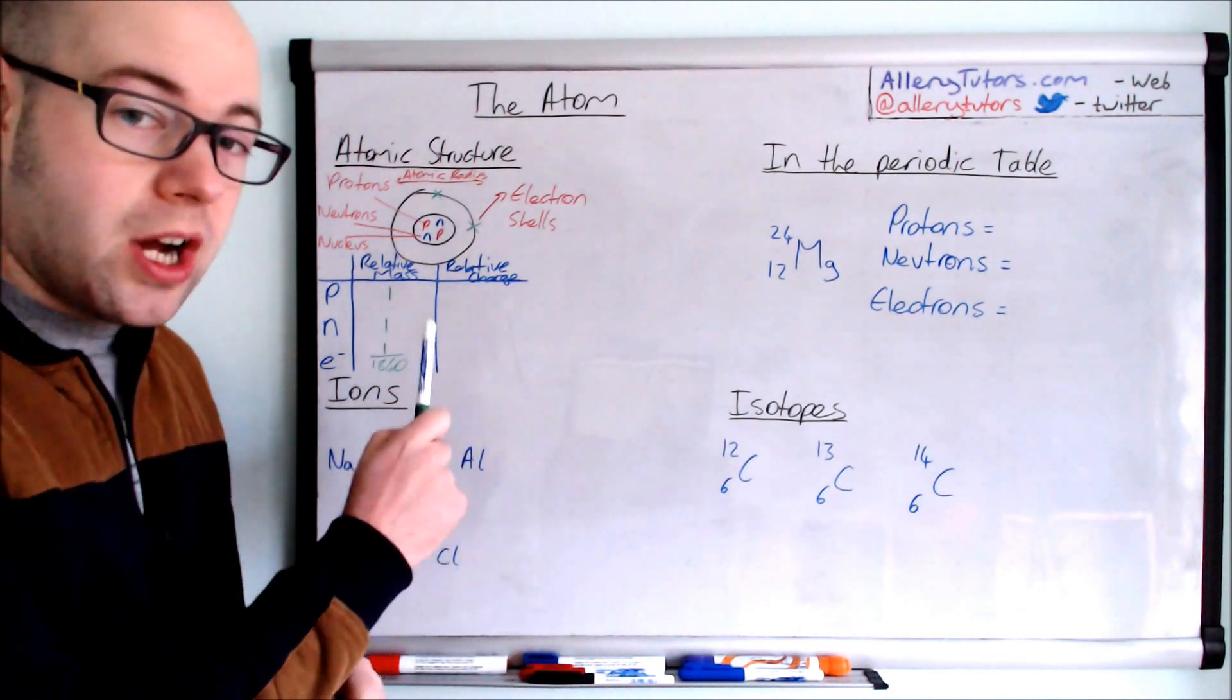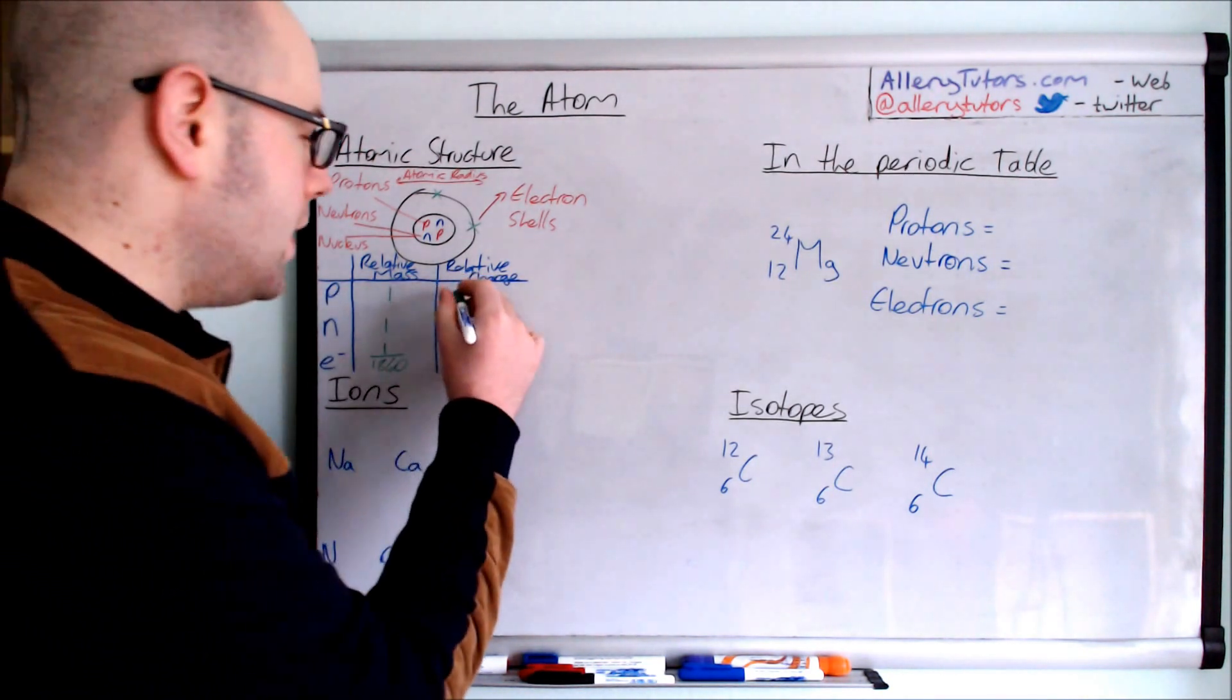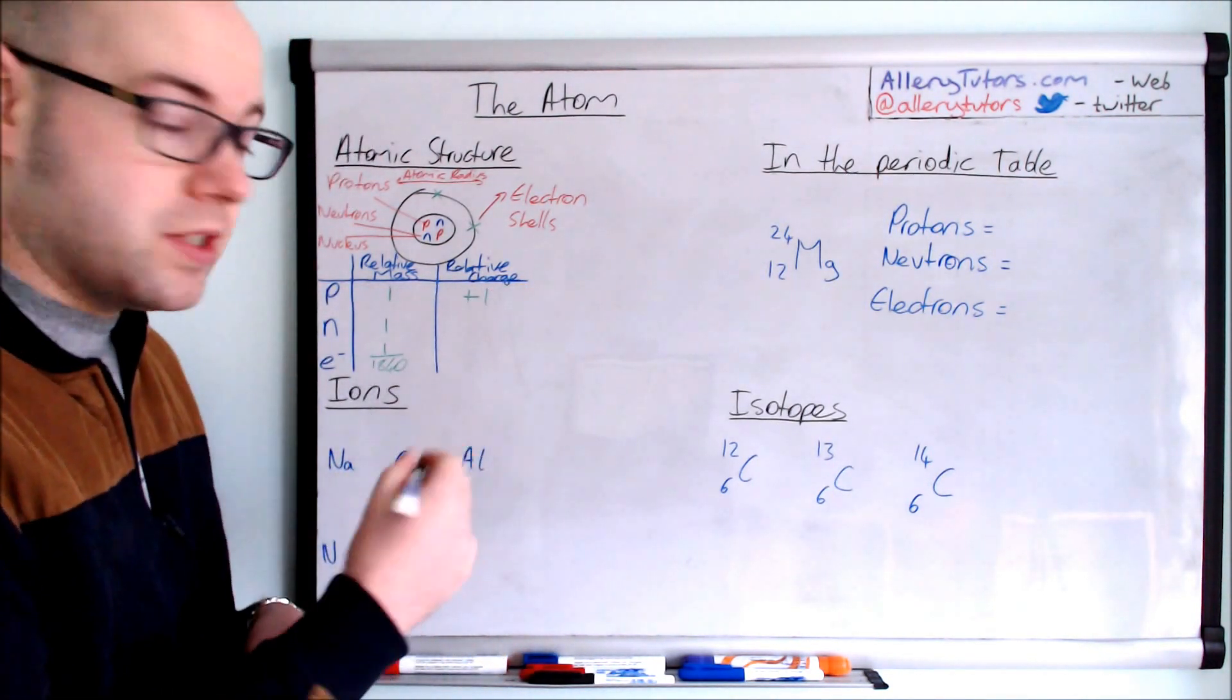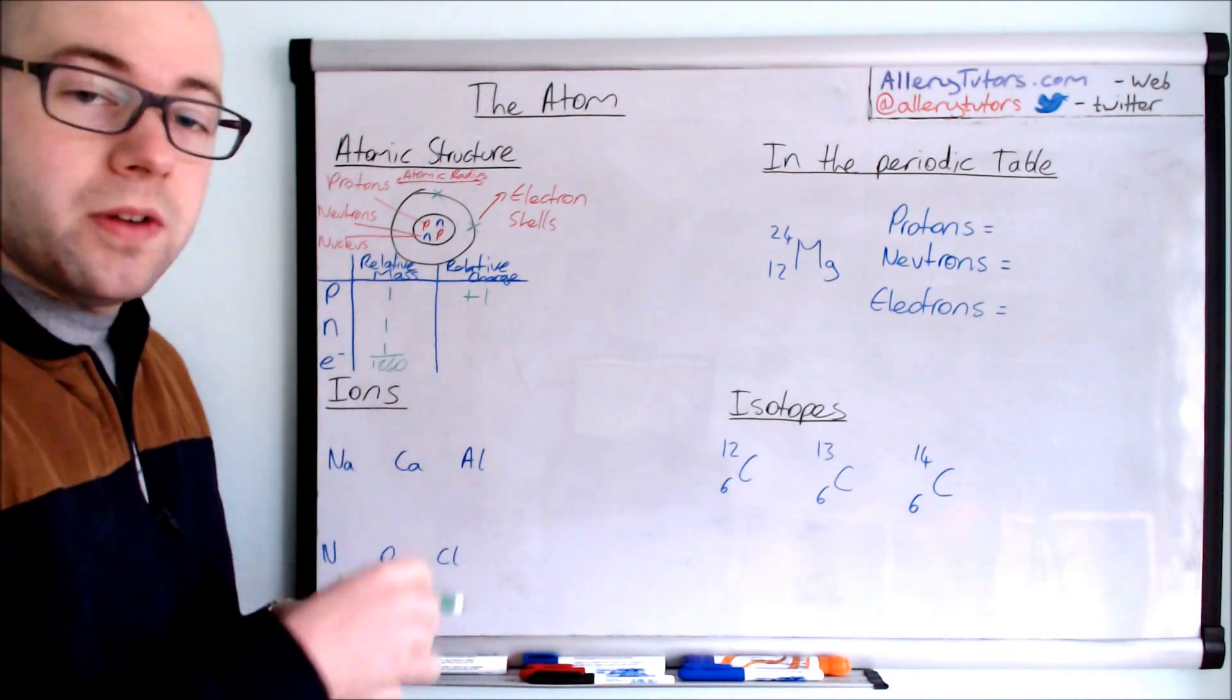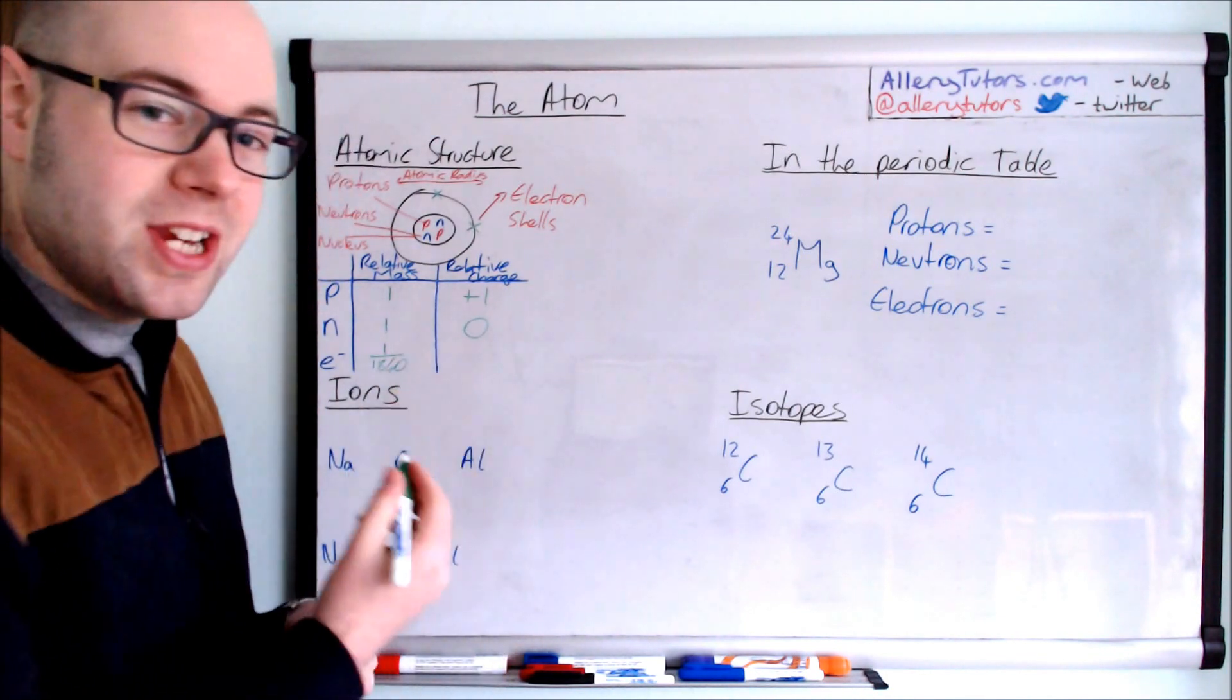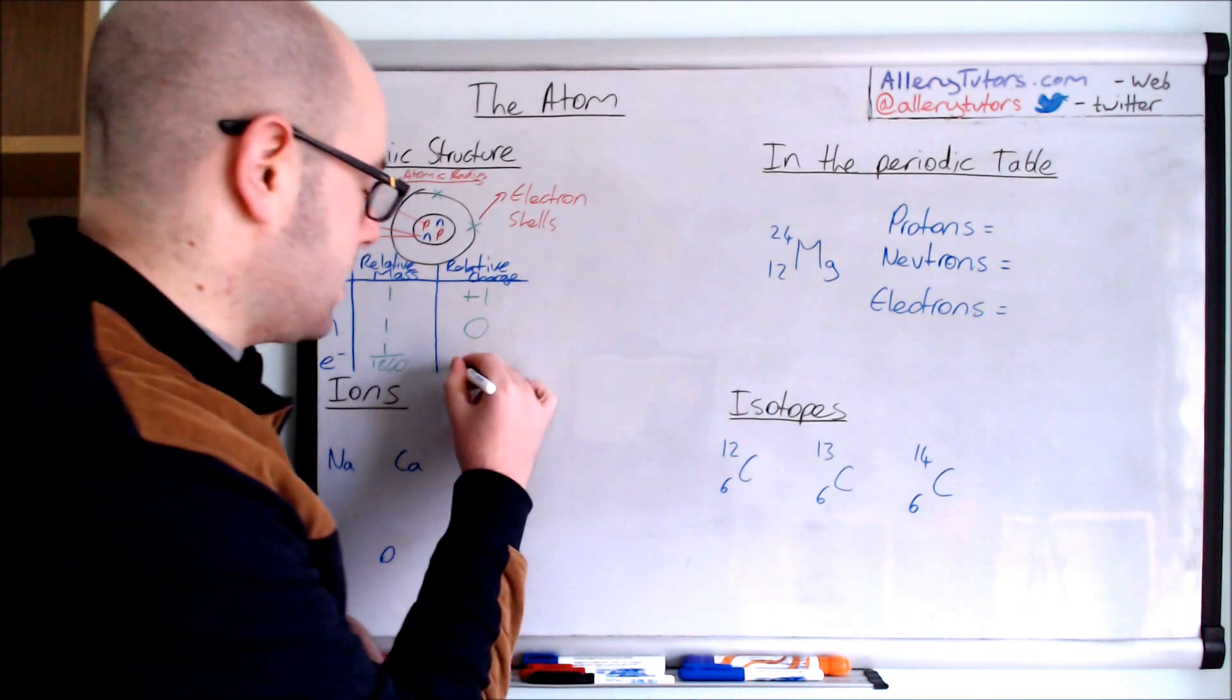And the relative charge is the charge of these things. So the proton has a relative charge of plus 1. In other words it's positively charged. The relative charge of a neutron is neutral. So that's how you can remember it. Which is 0 so it has no charge. And the relative charge on an electron is minus 1. It has a negative charge.